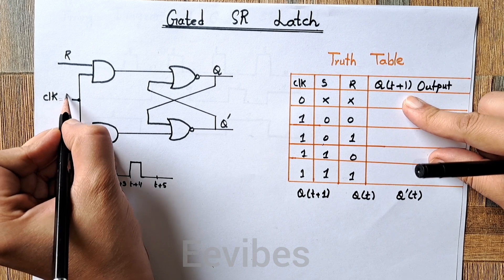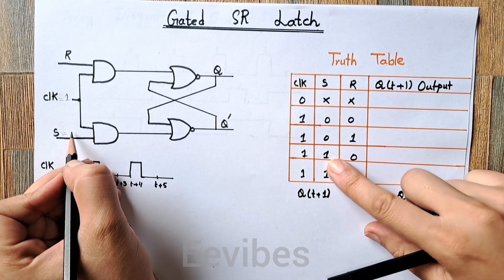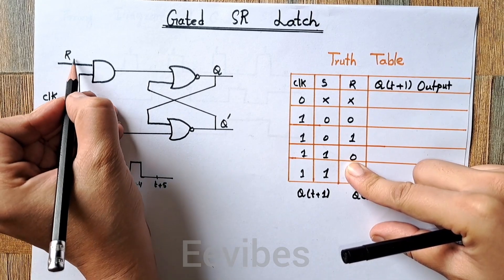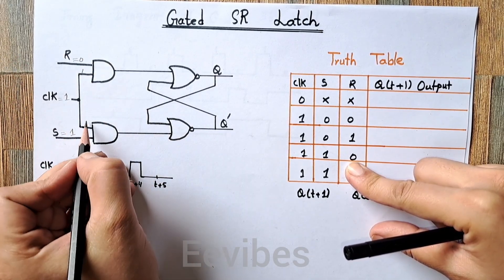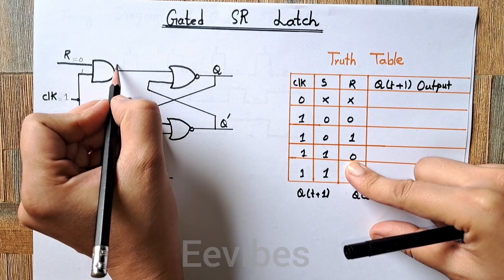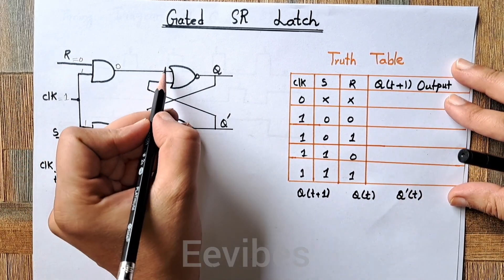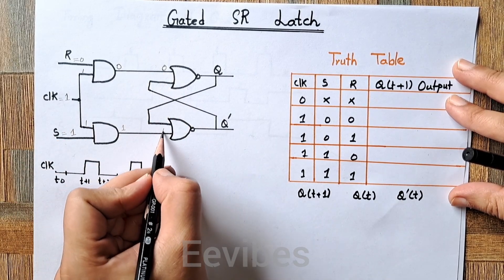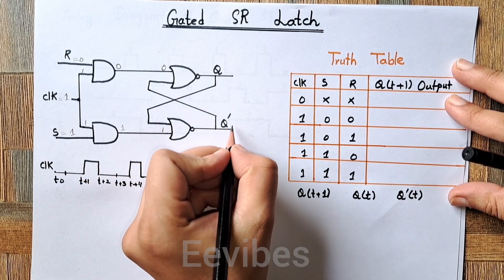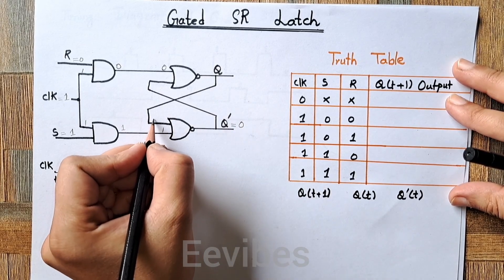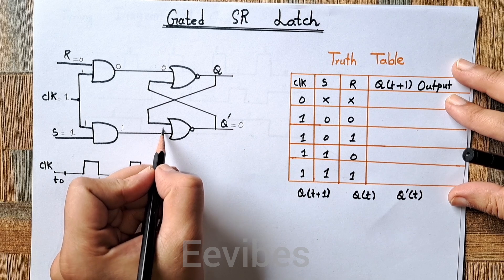Assuming the clock signal is equal to one and I am going to set the output, I will use the combination where S=1 and R=0. The clock signal is common to both AND gates, so with S=1 the AND gate produces output equal to one, while with R=0 the other AND gate produces output equal to zero. We know that if any input of a NOR gate is equal to one, it will produce output equal to zero, regardless of the other input.